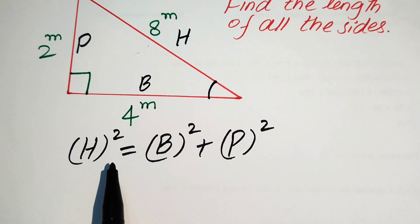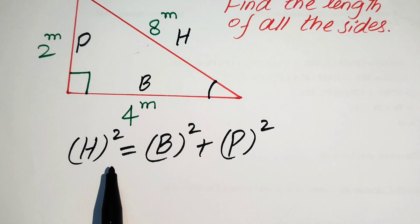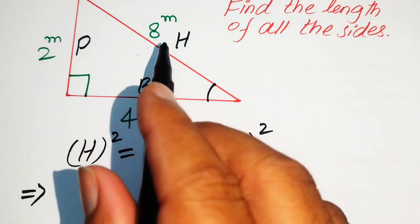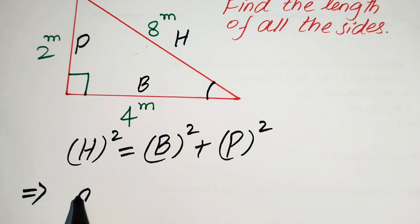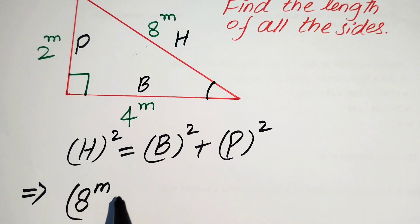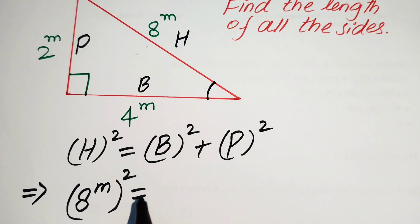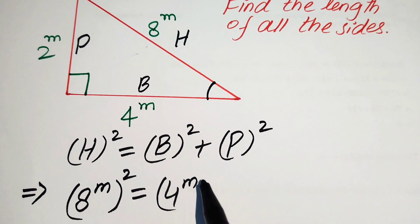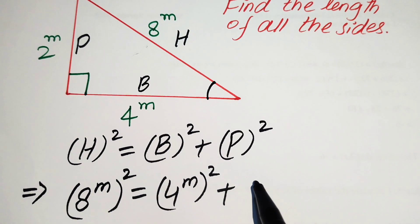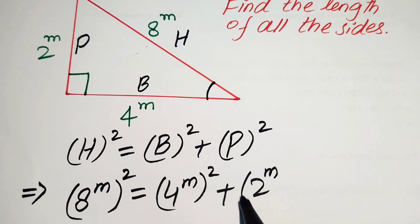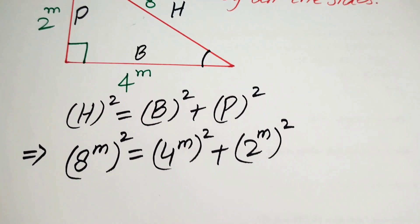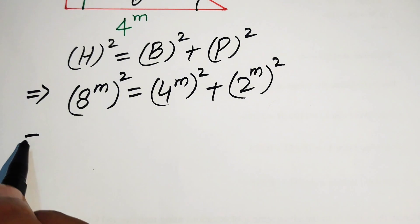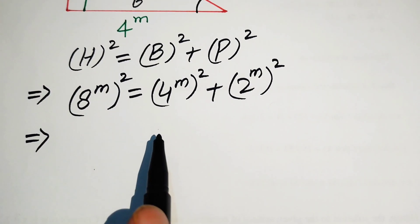Now we substitute all the values. Our hypotenuse is 8 to the power of m, so it becomes: 8 to the power of m, whole squared, equals 4 to the power of m, whole squared, plus 2 to the power of m, whole squared. Now we simplify these terms using the exponential law.